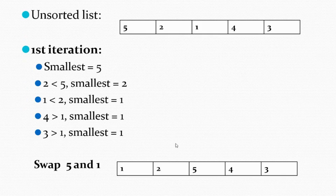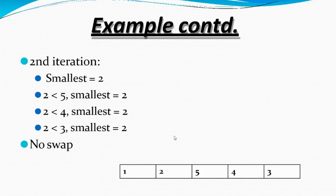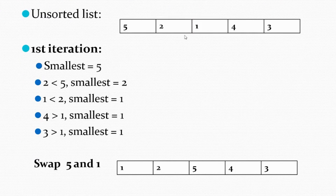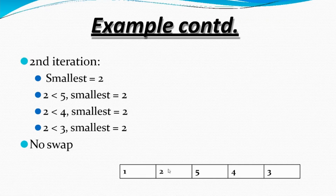Here's an example with unsorted array [5, 2, 1, 4, 3]. The whole list is initially unsorted. We find the smallest element, which is 1, and swap 1 and 5 — that's our first iteration. In the second iteration, 2 is already in position so no swap is needed. Then we look at [5, 4, 3] and find 3 is the smallest, so we swap 3 with 5.